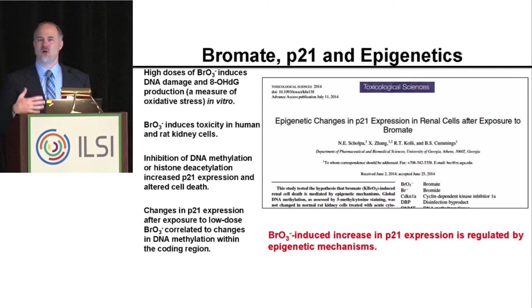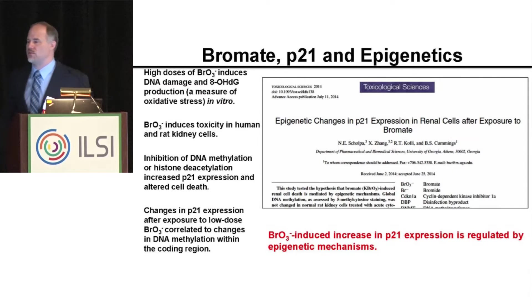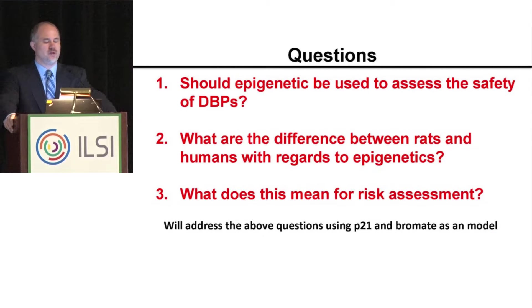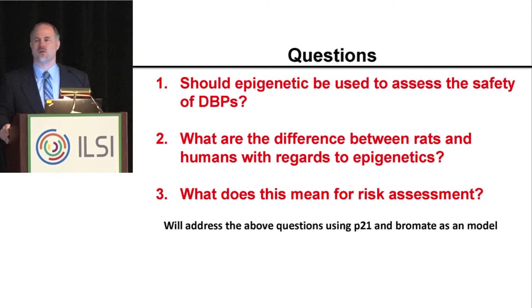This brings up the idea that bromate induces P21, which concerns me about how it might be used in the regulatory world. The key questions are: should we use epigenetics to assess the safety of disinfection byproducts? And what's the difference between rats and humans? Randy Yertle talked about how we've been curing cancer in mice for years, but it doesn't translate to humans — his theory is that epigenetics are not the same. I'll use P21 as a case example.